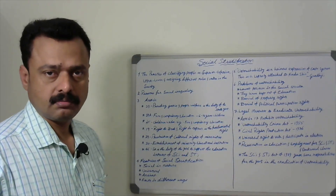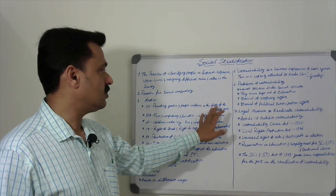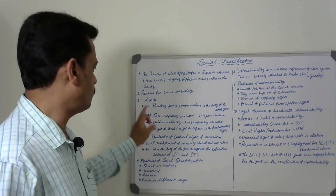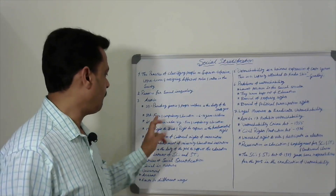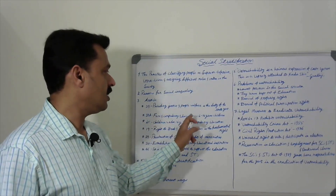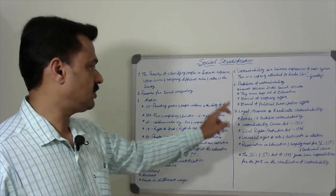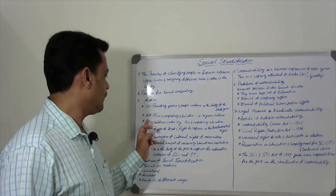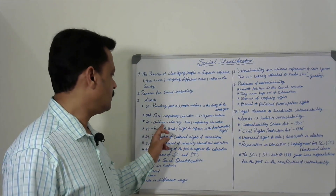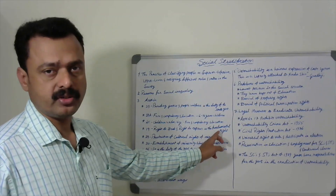Article 39 states that providing justice and people's welfare is the duty of the state government. Article 21 provides for free and compulsory education for children of 6 to 14 years. Article 45 also says that children under 14 years should get free and compulsory education.